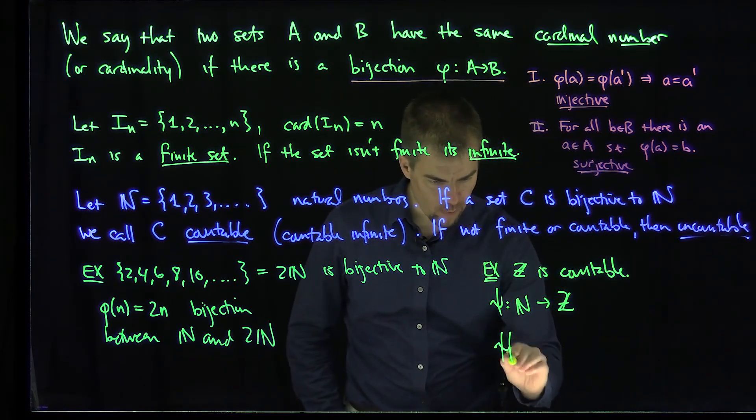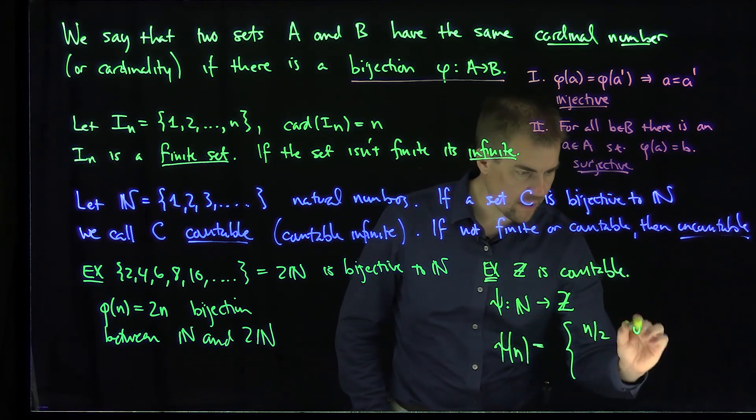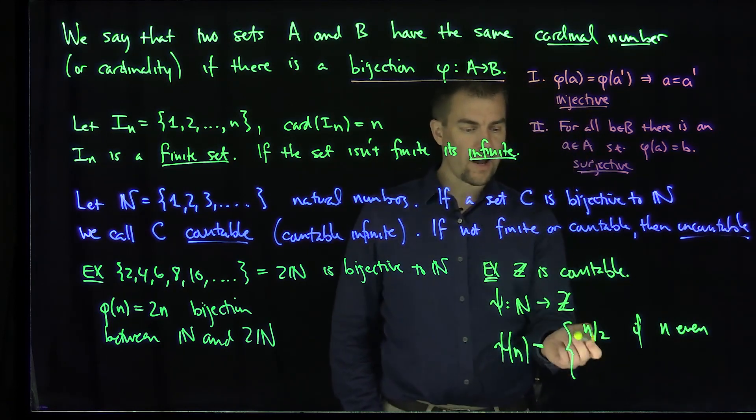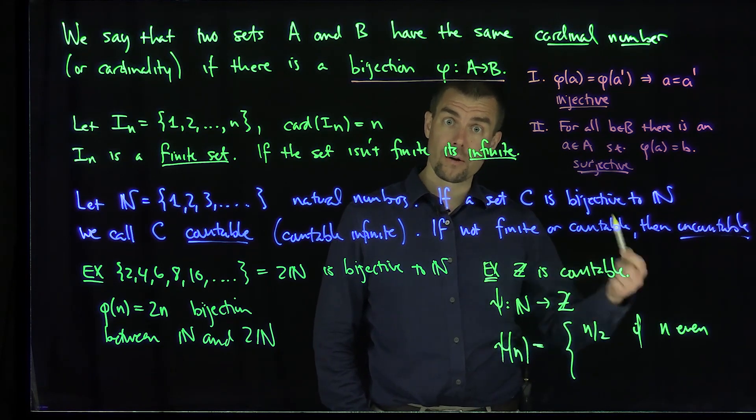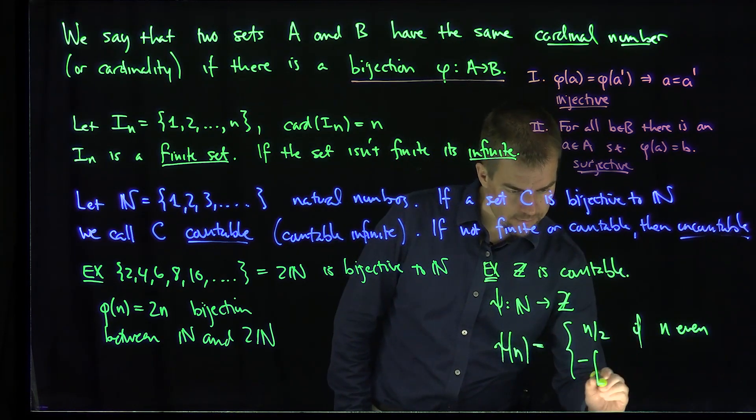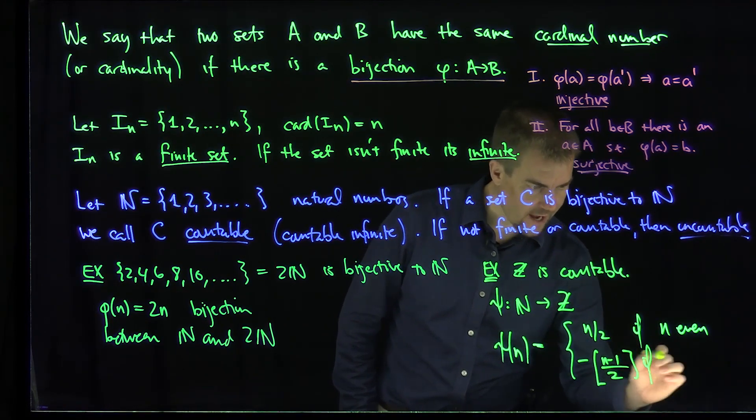I'll just let psi of n be n over 2 if n is even. So in this way, if I plug in 2, I get to 1. If I plug in 4, I get to 2. If I plug in 6, I get to 3. So we can see we get all the natural numbers when n is even.